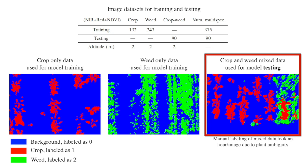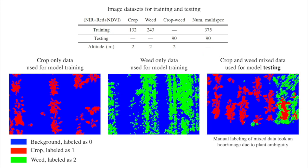On average, annotating one image takes about one hour, and we annotated 30 images for model testing. Considering aligned NIR, RED, and NDVI images, we have 90 testing images in total.